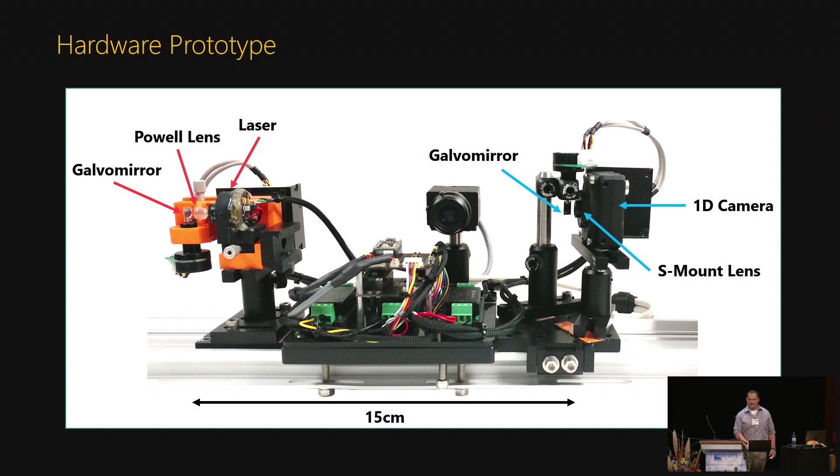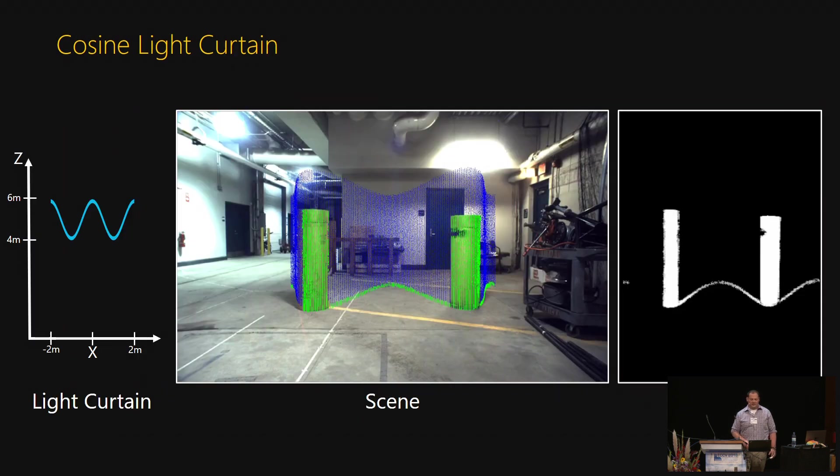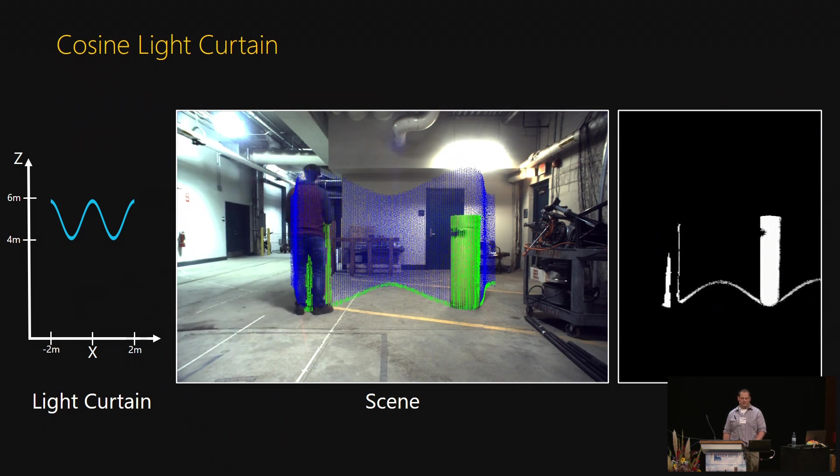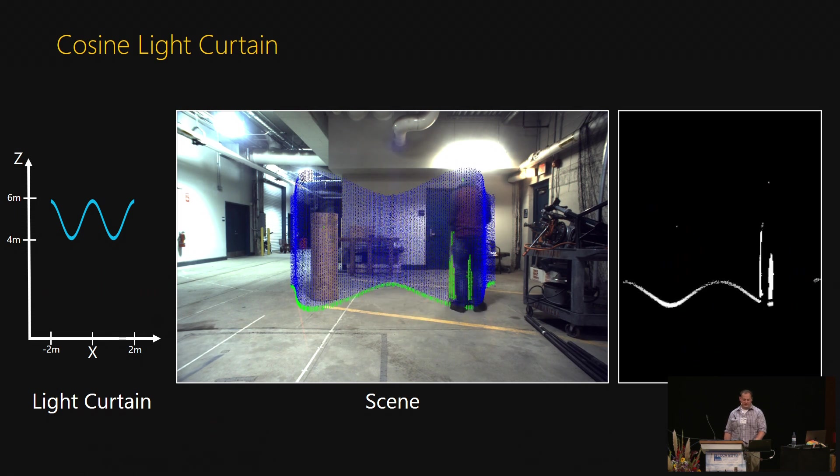Now, I'll show some of the curtains this device can generate. Here, the device was configured to image a cosine-shaped light curtain. The right video shows images captured by the line camera. The middle video is from the 2D helper camera's view, with the light curtain rendered in blue and the detections rendered in green. You can see that as the tubes are rearranged, the person is detected when he crosses the curtain.